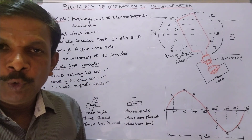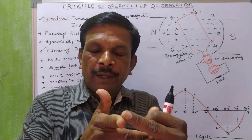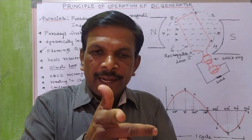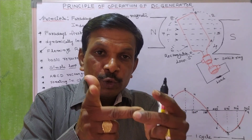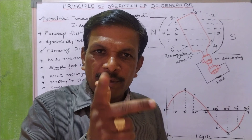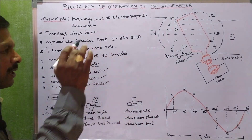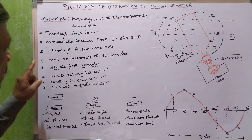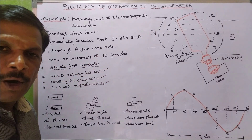The direction of the induced EMF is given by Fleming's right-hand rule. According to Fleming's right-hand rule, the thumb shows the motion of the conductor, the index finger shows the direction of the magnetic field, and the middle finger shows the direction of the induced EMF.